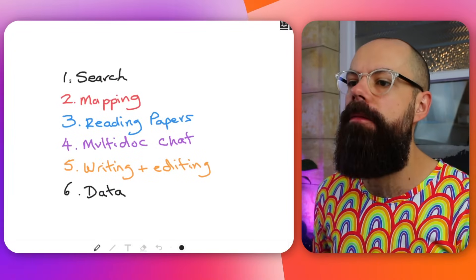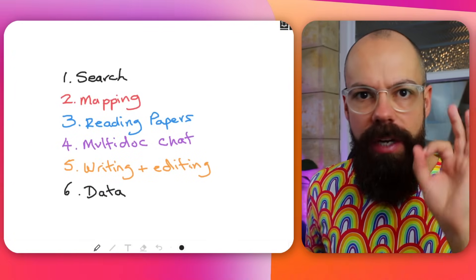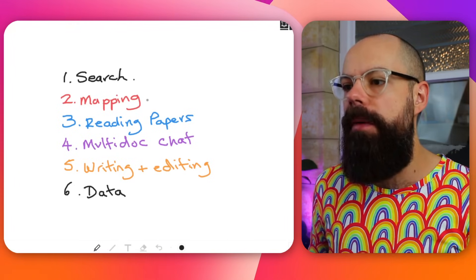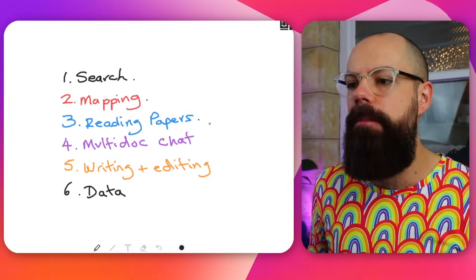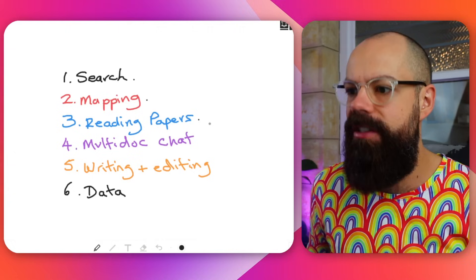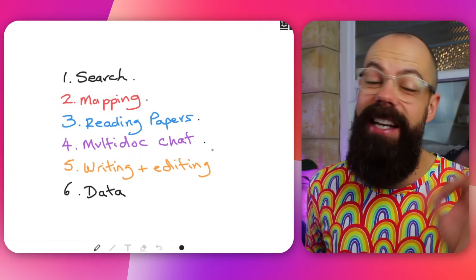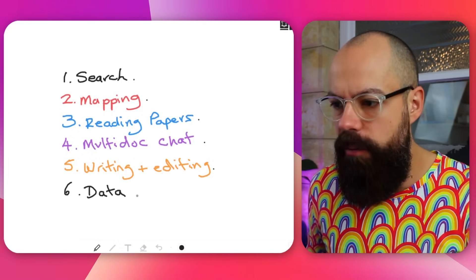You've asked for it, so here it is — my top AI tools for academia and research. Here are all the different sections I think an AI tool can help with in an academic life: search, mapping, reading and summarizing papers, multi-document chat, writing and editing, and working with data. Here are the AI tools you should use if you just don't want to think about searching all the rest of the AI universe.